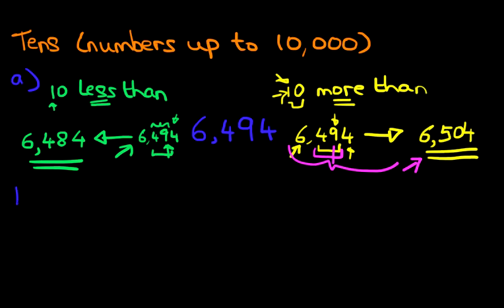Let's look at one more example. We're just going to change colors. Now suppose we have the number 7,304.